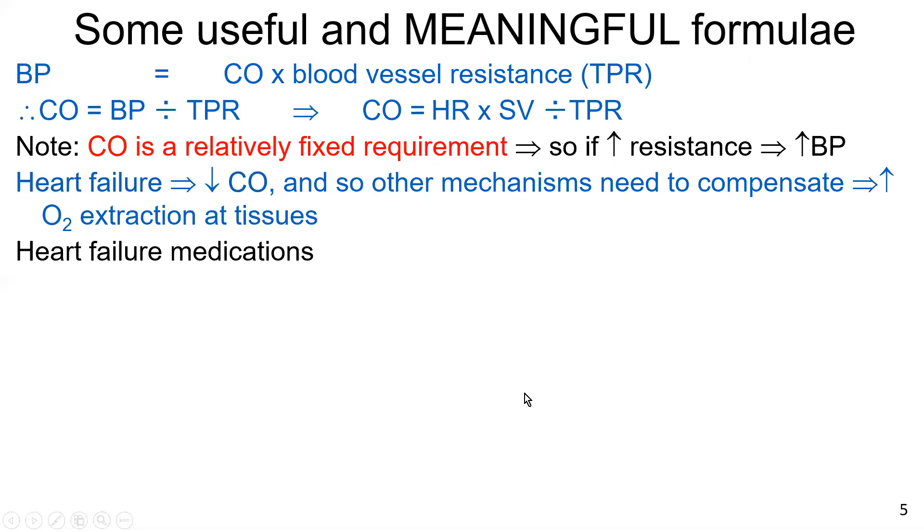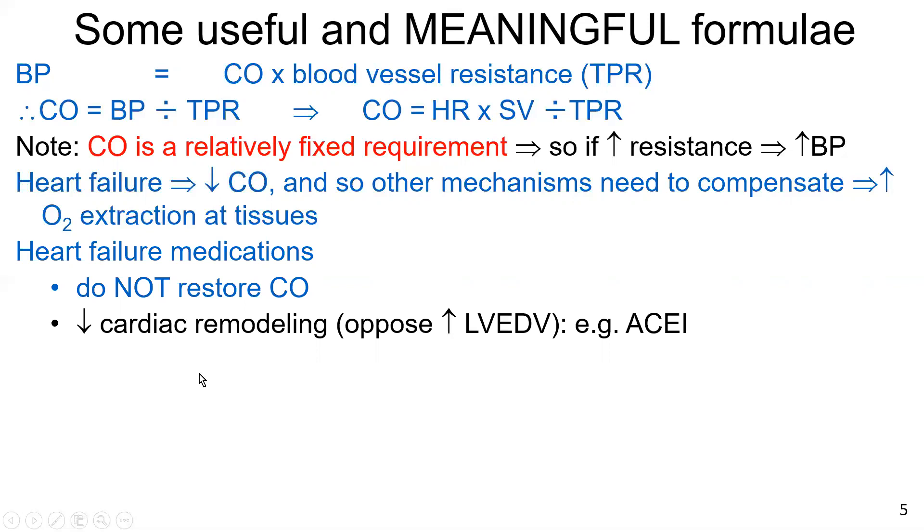The goal of heart failure medications are not to restore cardiac output. That is not normally the goal for heart failure medications, because that will progress heart failure at a greater clinical progression rate. But a goal of treatment in the case of ACE inhibitors, angiotensin-converting enzyme inhibitors, such as perindopril, any generic drug ending in -pril, P-R-I-L. This is to slow down cardiac remodeling and oppose inappropriate increases in left ventricular end-diastolic volume.